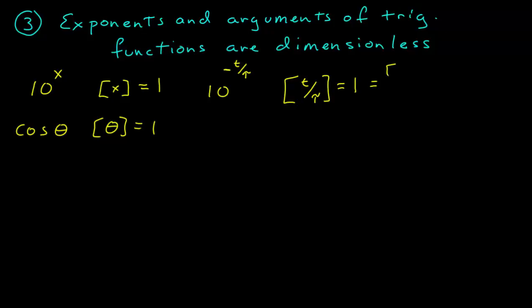And if that's equal to the dimension of time divided by the dimension of tau, that tells us that the dimension of tau also has to equal time, because this ratio must cancel and must equal 1.